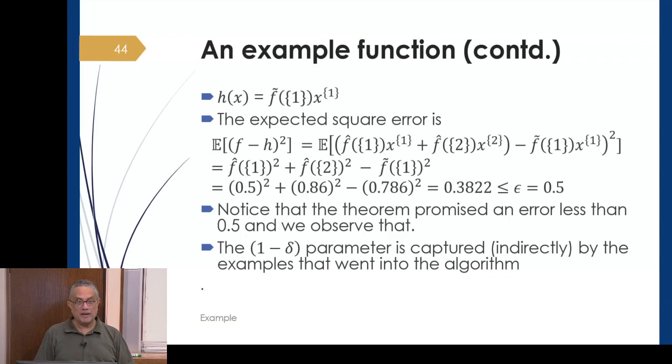Since the theorem promised an error less than 0.5, it delivered. There was one additional parameter in PAC learning we had to discuss: the confidence level. You learn this, but what's the probability you learn it with? In this particular example, the 1-δ parameter is captured indirectly by the examples we drew. The examples give us the probability with which it's correct. When we look at the theorem in detail in the next lecture, we'll see a way of calculating this probability.